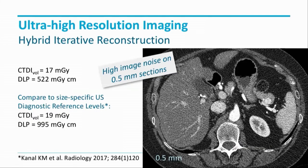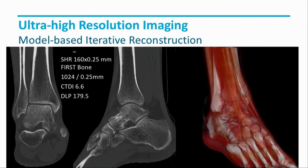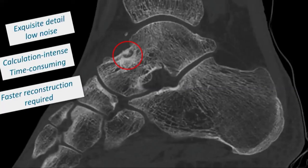If you look at the abdomen, noise becomes very prominent even at a dose within the classic reference levels of 20 milligrams. If you look at the bones, you can see exquisite quality. The solution to the noise is model-based iterative reconstruction. If you do that, you get exquisite detail and low noise, but it takes a long time to reconstruct these images. It is very time-consuming to get excellent image quality using model-based iterative reconstruction. So the question is: can we do something more clever to get to this result faster and with less effort?